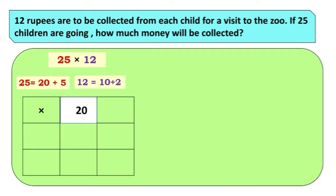So 20 ya box madhe, aani 5 ya box madhe. Aani multiplier aplella ikadcha boxes madhe write karaije aahe: 10 and 2. Now let's multiply 10 and 20. Aata mula no, aplella 10 aani 20 ya doncha multiplication karaije. 20 ya unit place var 0 aahe aani 10 cha suddha unit place var 0 aahe.